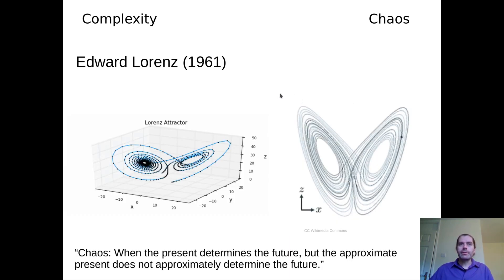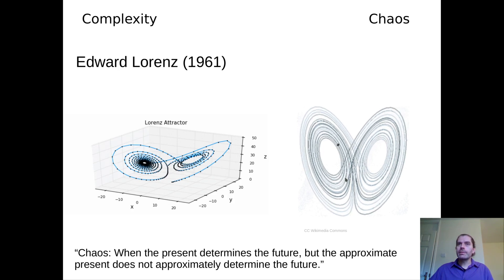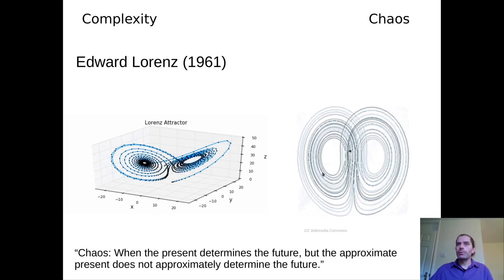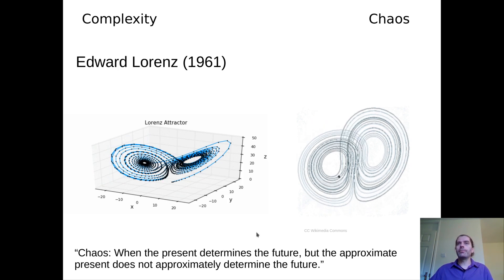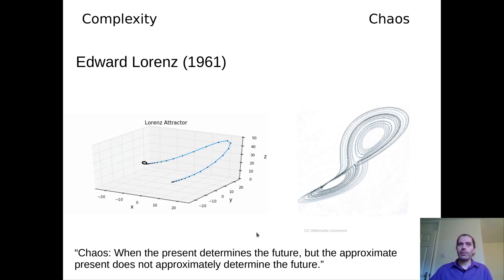We can see that better in a dynamic representation. So as you can see, the state loops around one of these areas, but occasionally it jumps from one of the areas to the other. And in this transition point, here, where the state can switch between the two different parts of the attractor, very, very small differences in the current state determine whether it switches or not. As Lorenz said, chaos means that the present determines the future, but the approximate present does not approximately determine the future.